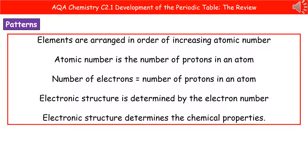Considering the modern periodic table, there are a few facts to remember. Elements are arranged in order of increasing atomic number, and the atomic number tells us the number of protons in the atom. The number of electrons is always the same as the number of protons in an atom. The electronic structure is determined by the atomic number, and the electronic structure then tells us the chemical properties because it's all determined by the positioning of the electrons.